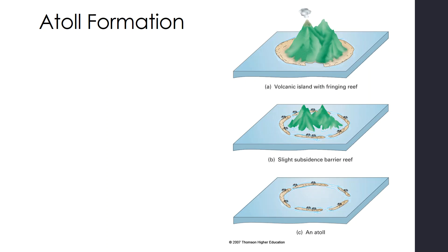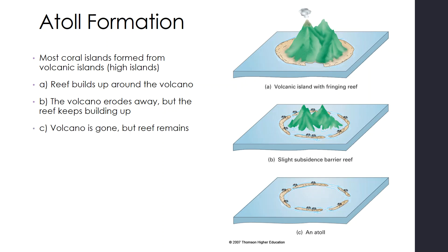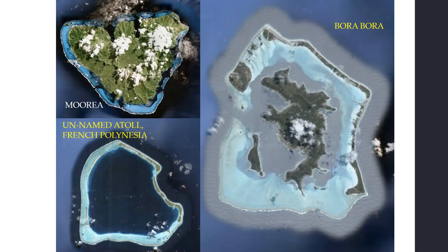So what is an atoll? An atoll is a small coral island formed from volcanic high islands. In the beginning you have a volcano, and then you have a reef that is building up around that volcano. The volcano erodes away but the reef keeps building up, so when the volcano is completely gone we still have that reef remaining, which is a very low-lying land formation. You get this circular island or islands with a lagoon in the center. We can see Morea in the top left, which is that high volcanic island, then Bora Bora at the next stage where most of the island has eroded away, and then there is an unnamed atoll in French Polynesia that looks like a big ring of reef with a lagoon in the middle.